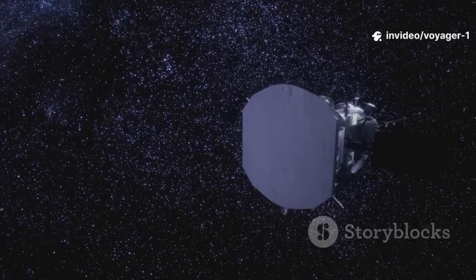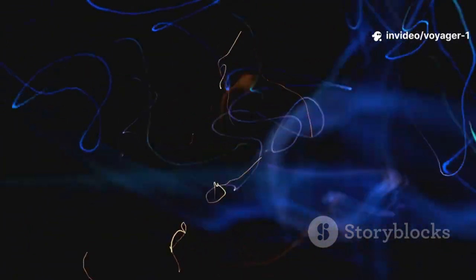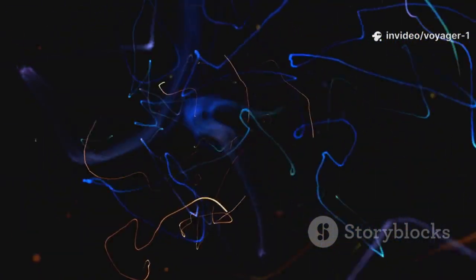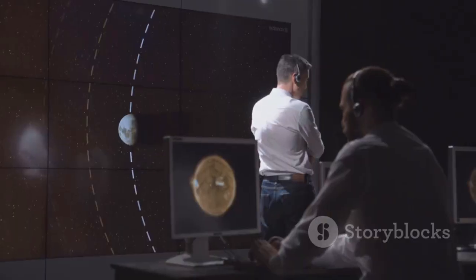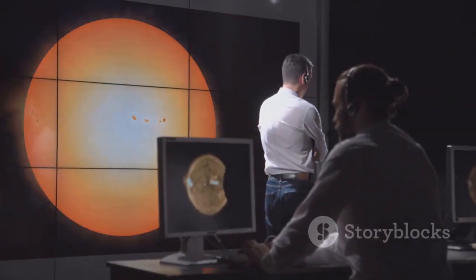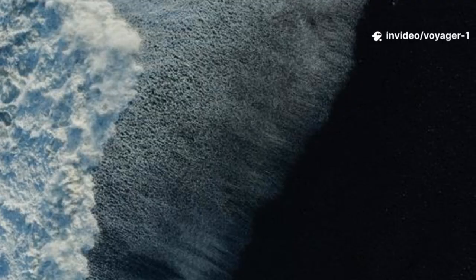The heliopause is the edge of this bubble. It's the place where the sun's wind finally stops, pushed back by the wind from other stars in the galaxy. Scientists imagined this boundary would be quite distinct, a bit like crossing a shoreline.